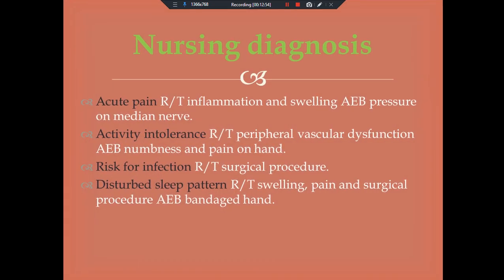Nursing diagnosis. The first nursing diagnosis is acute pain related to inflammation and swelling as evidenced by pressure on the median nerve. Activity intolerance related to peripheral vascular dysfunction as evidenced by numbness and pain in the hand. Risk for infection related to surgical procedures. Disturbed sleep pattern related to swelling, pain, and surgical procedures as evidenced by bandaged hand.